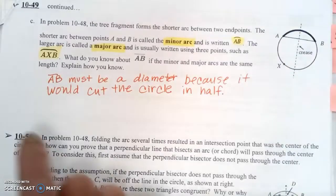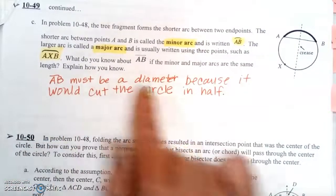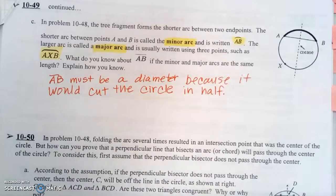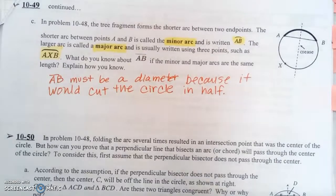So if they're the same length, then AB is going to be a diameter because it would cut the circle in half, and that would also make it a semicircle.